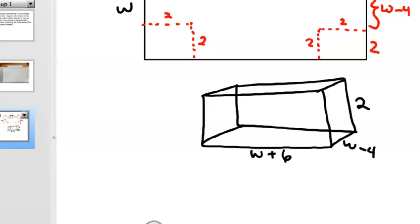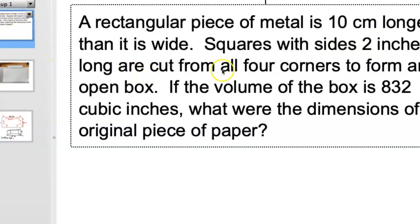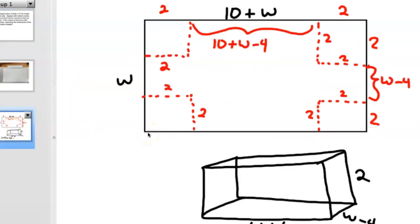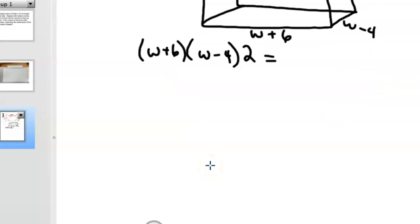All right, so our volume for this thing would be W plus 6 times W minus 4 times 2. And we know that has to equal, if we go back to the original problem, that has to equal 832. So we're going to set that equal to 832 cubic inches. And so you'd start distributing this thing. So you'd have, we'll save the 2 for last, but you'd have W squared plus 6W minus 4W minus 24. That's all times 2 equals 832.